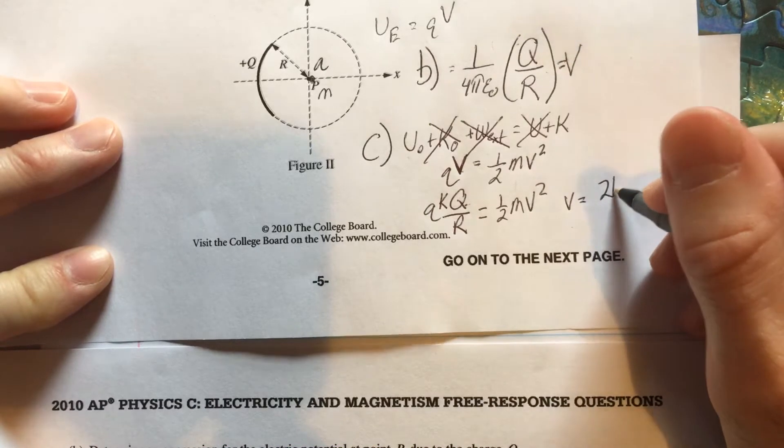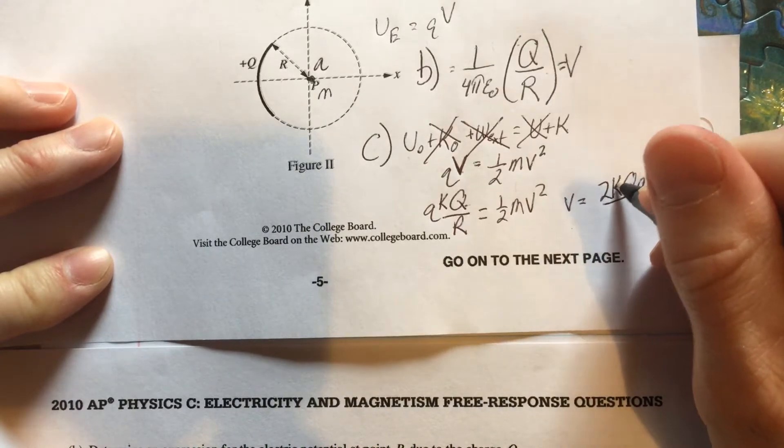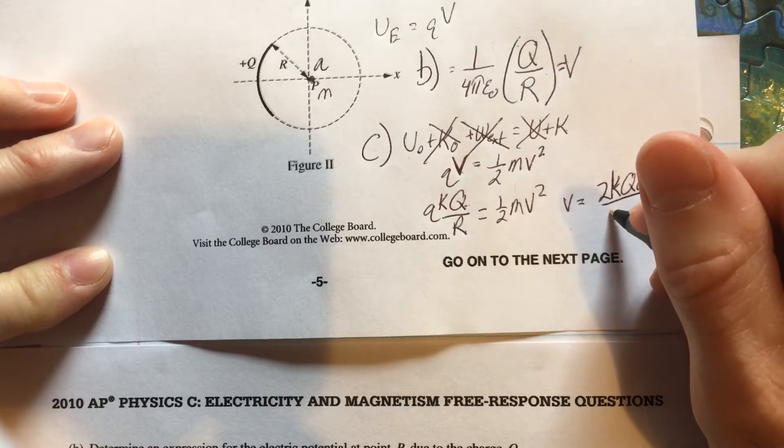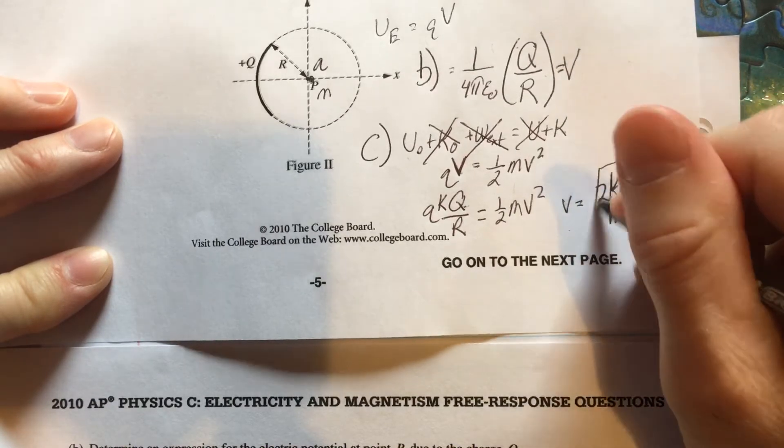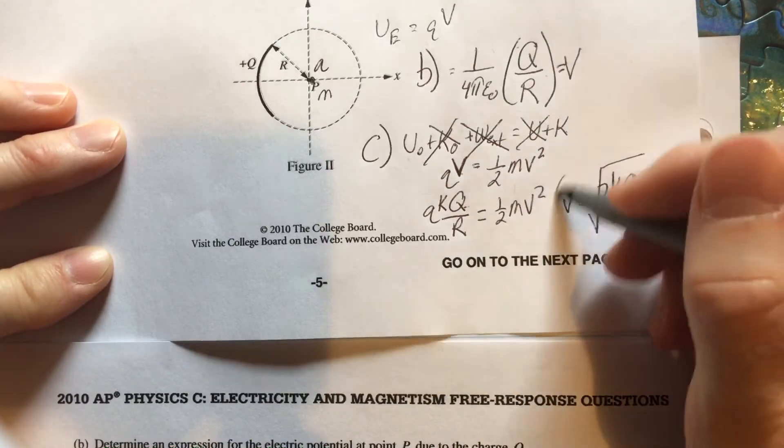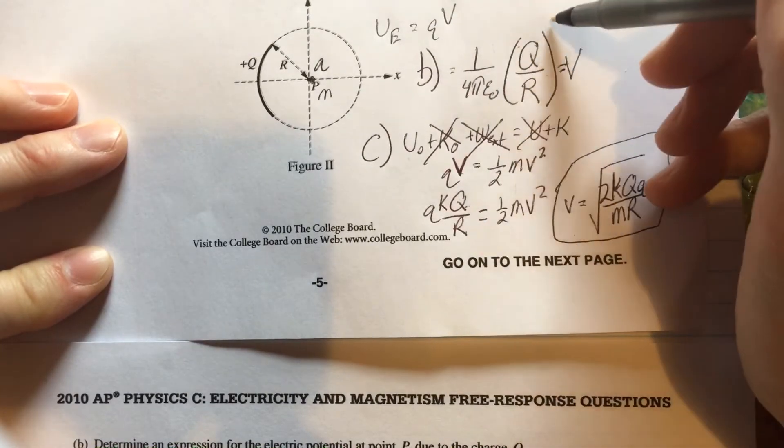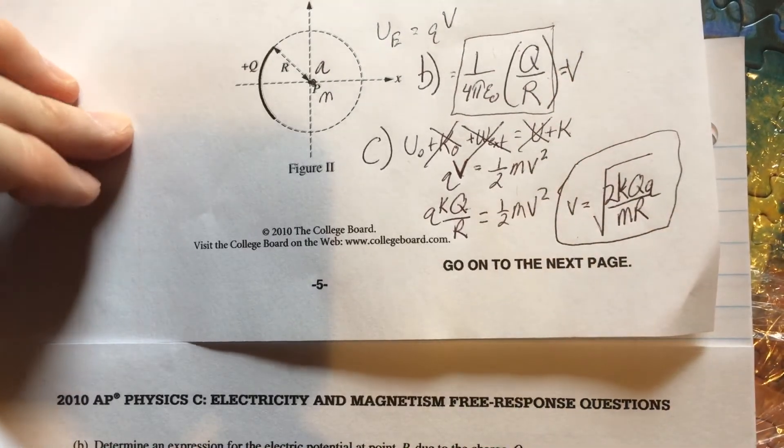So I would have Q times K times big Q over big R equal one-half mV squared. Solving for V, I'm going to have to multiply both sides by 2 and divide them by M. So I'll multiply it by 2. I like to group my Qs together. That's a little K, not a big K. And then I'll divide by the mass. And then I'll take the square root. That is my final answer. Always circle your answer so that your grader knows what the end result is and they don't have to guess.